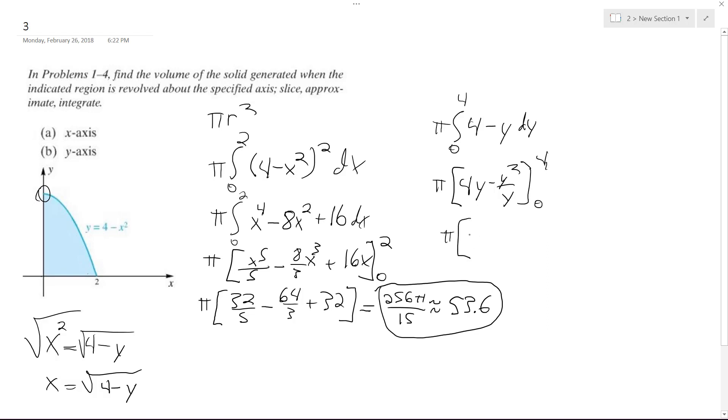All right, so we get 16 minus 16 over 2, which is 8. I need to watch my handwriting, this is a 2. 16 divided by 2, which is 8, and then 0 just cancels all that out. So what we end up with is 8 pi, or 25.13. And that's it!